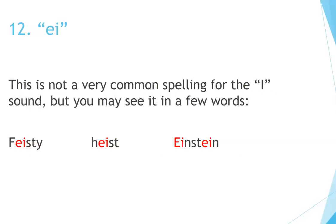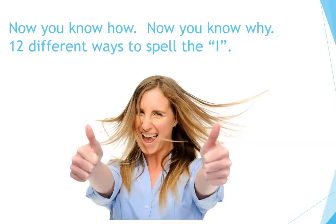Number 12: E-I. This is not a very common spelling for the I sound, but you may see it in a few words: feisty, heist, Einstein. Now you know how. Now you know why. 12 different ways to spell the I.